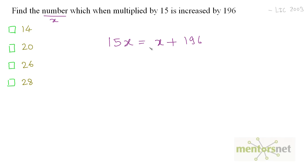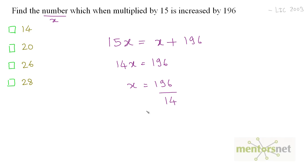Solving for x: 15x minus x is 14x, which equals 196, so x = 196 divided by 14. Since 14 times 14 is 196, x equals 14. So the answer is option A.